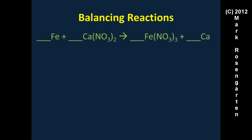Example five: iron and calcium nitrate form iron(III) nitrate and calcium. Iron and calcium are each balanced one-to-one, but the nitrate count differs. We use the LCM approach: two times three is six. We put a three in front of Fe(NO₃)₃ — giving three times two equals six nitrates — and a two in front of Ca(NO₃)₂ — giving two times three equals six nitrates. Note: because nitrate appears as a polyatomic ion on both sides, we balance it as one unit rather than balancing nitrogen and oxygen separately.